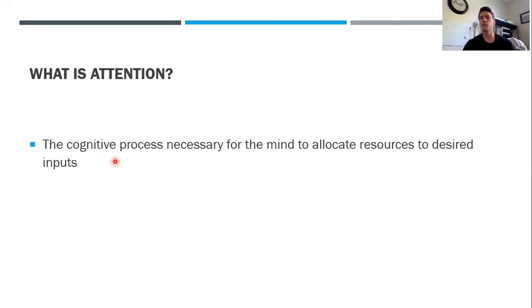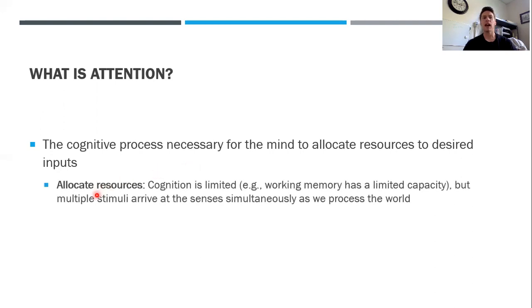In particular, it's a cognitive process necessary for the mind to allocate resources to desired inputs. What we mean when attention is choosing to allocate resources to desired inputs is that in everyday life, as you're walking through the world, there's a lot of stimuli that surrounds you—external noises, visual things you might see, things you might be touching. There's a lot going on at any given time in any given environment. The idea of allocating resources—we know from earlier lectures that cognition is limited.